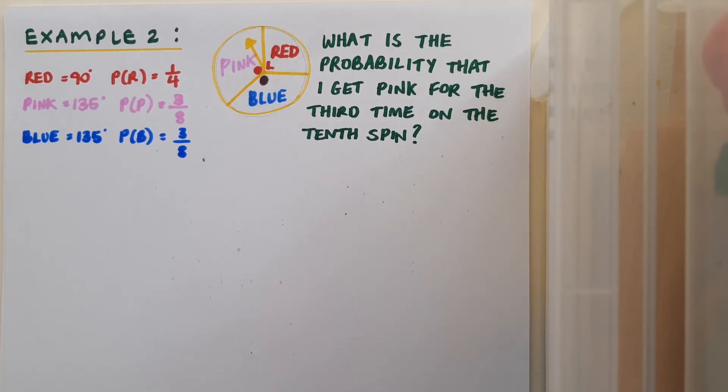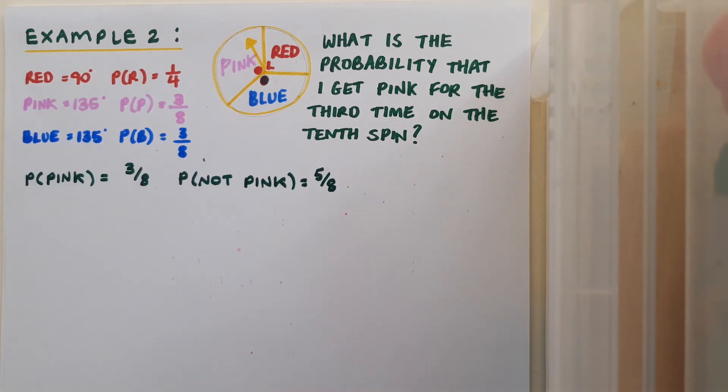Now since the question is about getting pink or not, I'm actually going to focus this down to the probability of pink and the probability of not pink. And this ties into the idea of P and Q, success and failure. Since the question is focusing on the idea of getting pink, I'm going to consider pink to be success, and I'm going to consider not pink to be failure, and call that Q.